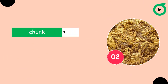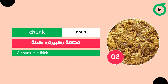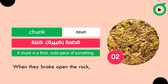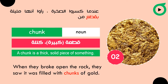Chunk. A chunk is a thick, solid piece of something. When they broke open the rock, they saw it was filled with chunks of gold.